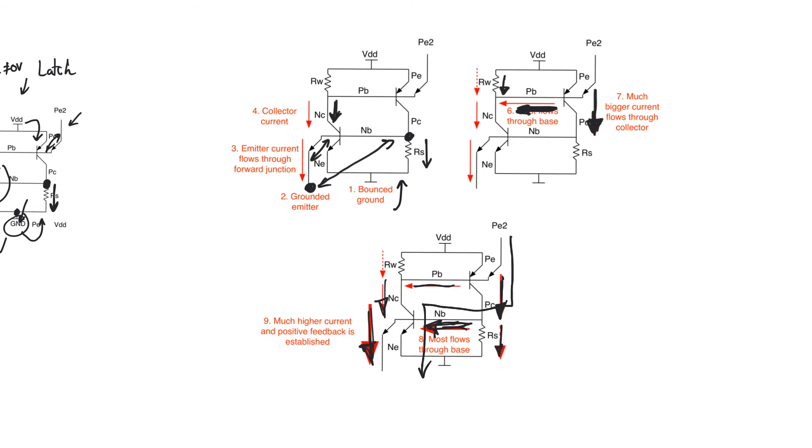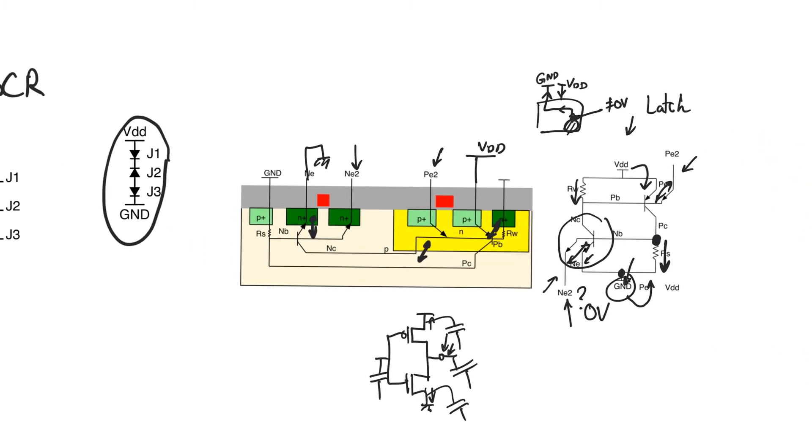So, how do we solve latch up? We solve latch up mainly by reducing the values of RS and RW. If we do that, we encourage most of the current to flow into RS and RW, instead of into the bases of the bipolar transistors. This prevents the positive feedback loop from having a gain more than one, and causes the feedback current to dampen and fall down. How do we decrease RS and RW?